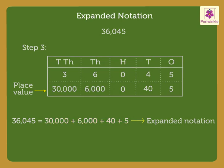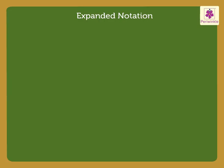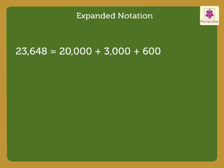Now, let us try some more examples. Look at the number 23,648. We write the number in expanded notation as 20,000 plus 3,000 plus 600 plus 40 plus 8.